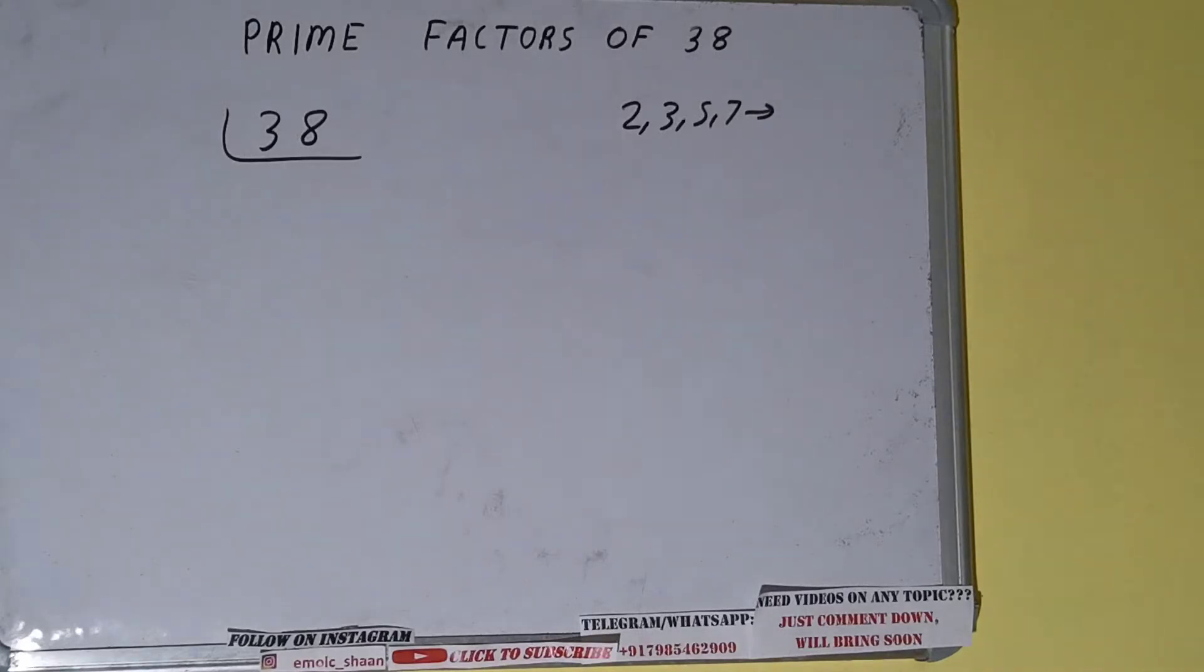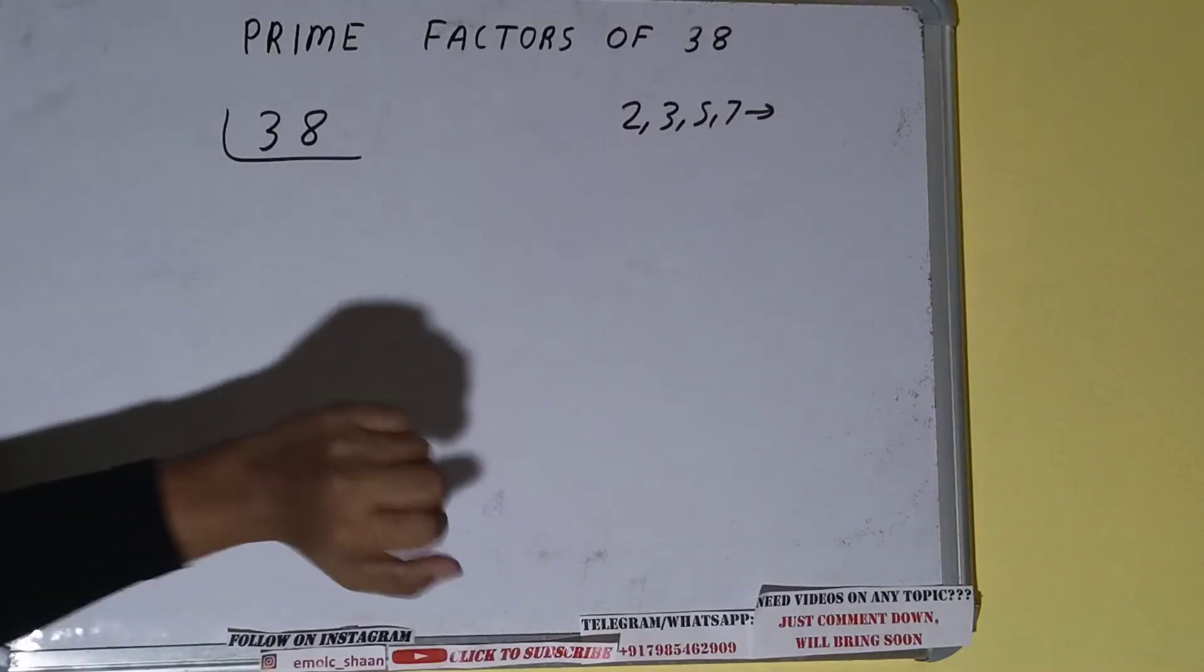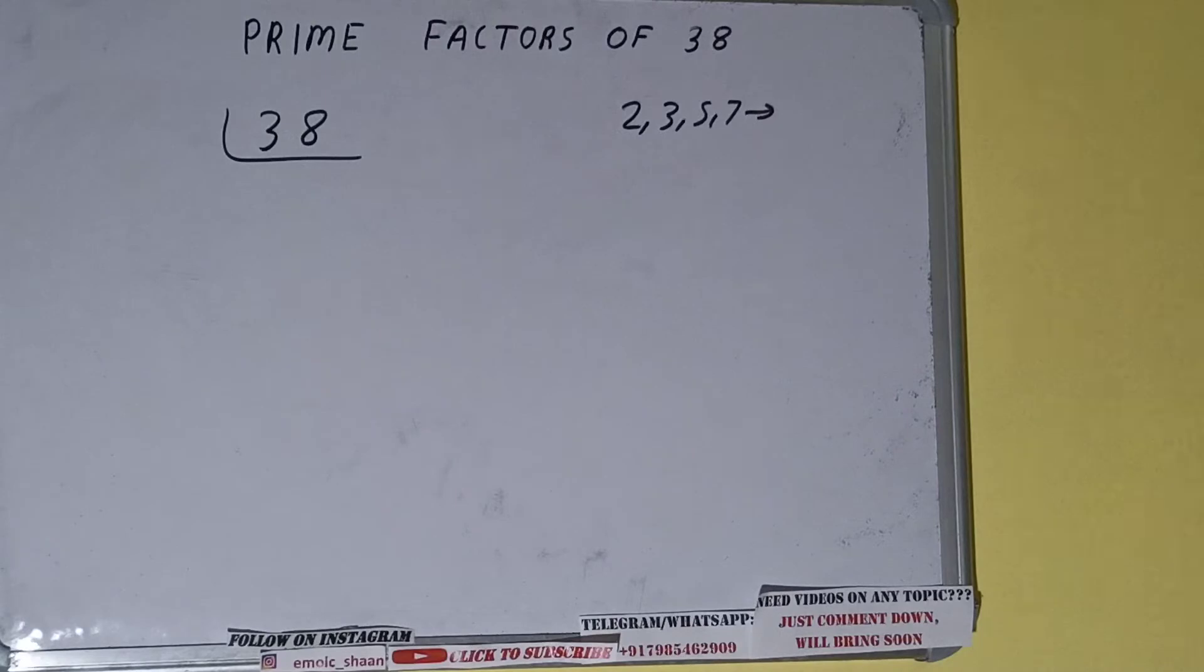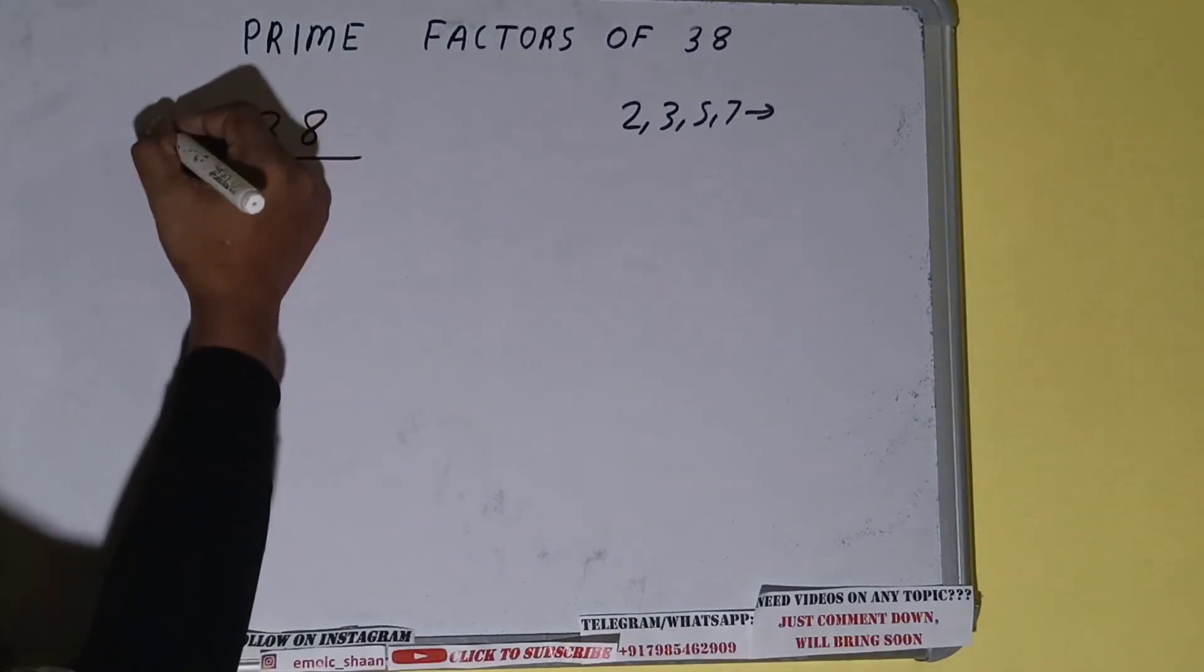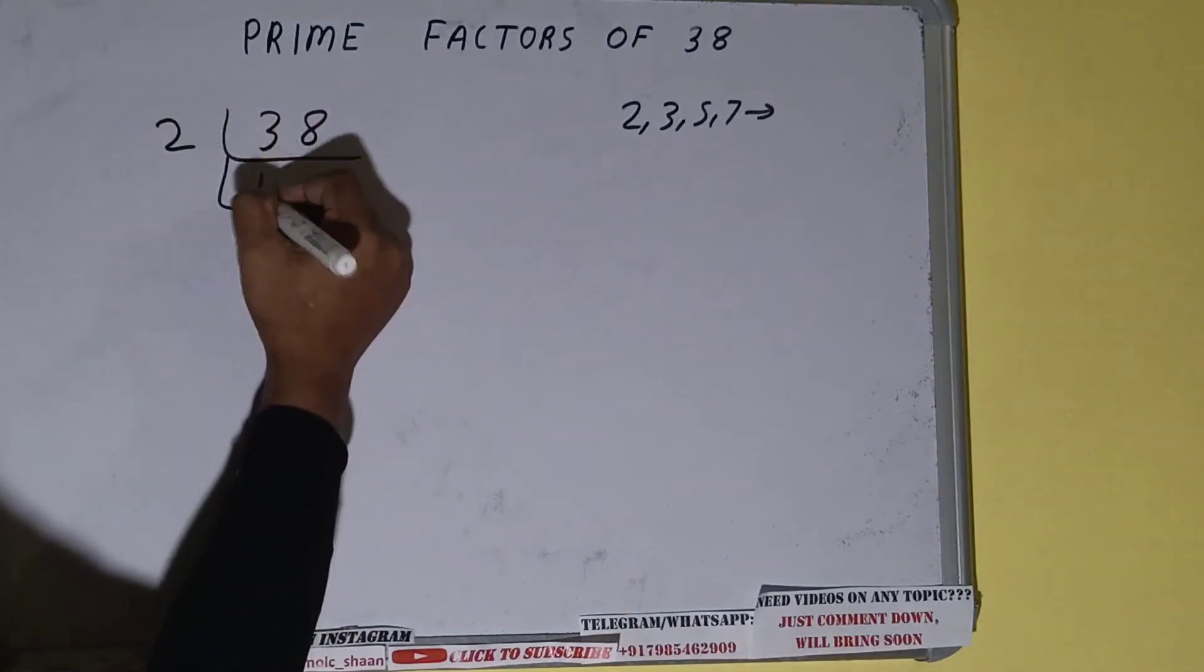Alright so we will be starting with the lowest prime number that is 2. Is the number 38 divisible by 2? Yes clearly it is divisible because the number is even so divide it and we'll be having 19.